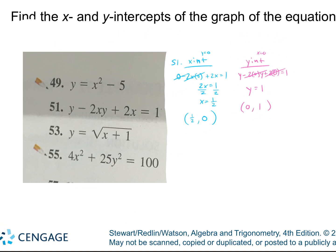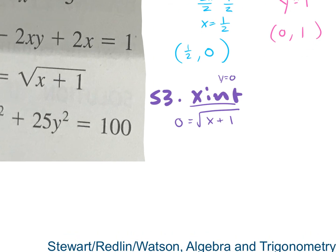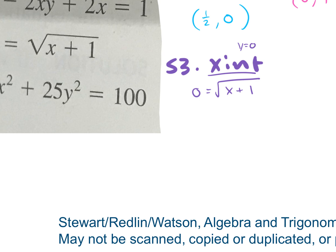Let's do problem 53. Find the x-intercept: plug in 0 for y. So 0 equals the square root of x plus 1. To get x by itself, square both sides — 0 squared is 0, and the square root and squared cancel on the right, leaving x plus 1. Subtract 1, so x equals negative 1. The x-intercept is (-1, 0).